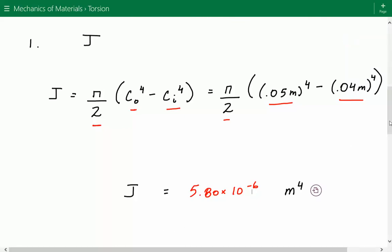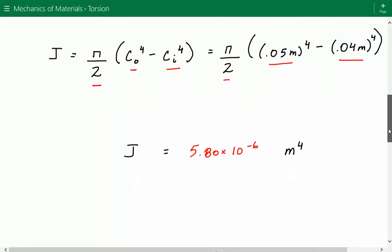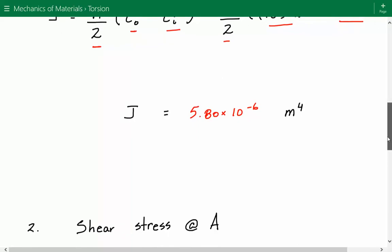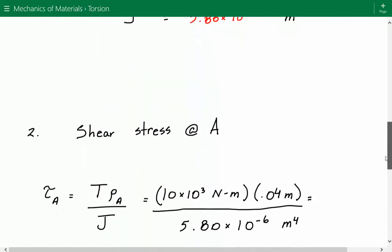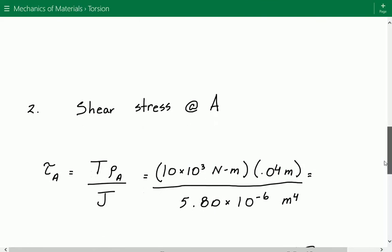Now that we've calculated J, we can calculate the shear stress. First we'll cover the shear stress at A. The shear stress formula when you have a torque acting on a circular shaft: the shear stress equals the torque multiplied by the radial distance from the center of the cross-section of interest, divided by J.